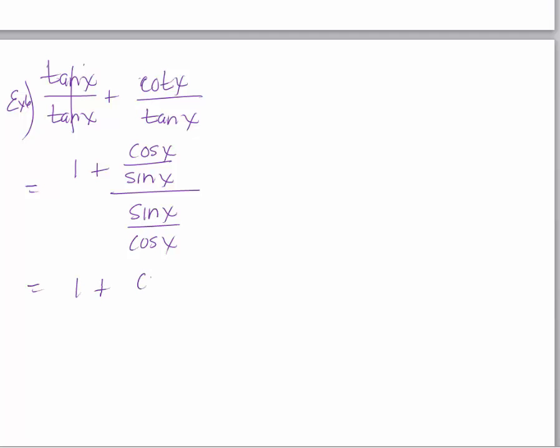I get 1 plus I'm going to multiply by the reciprocal. This is going to give me cosine squared over sine squared so that's going to be cotan squared. So 1 plus cotan squared is equal to cosecant squared.